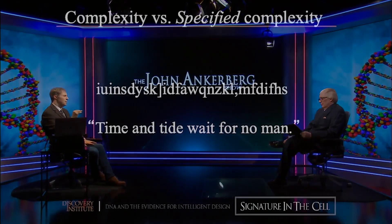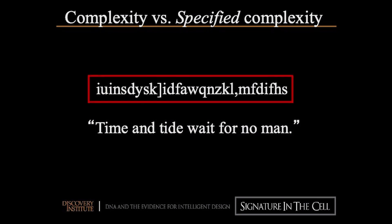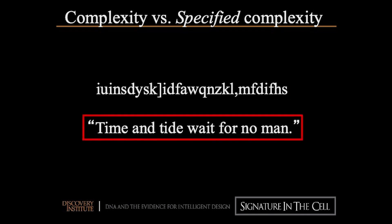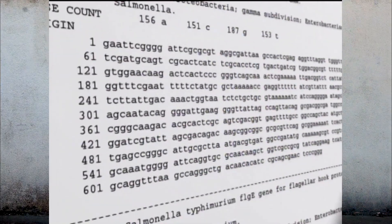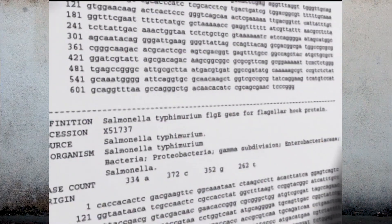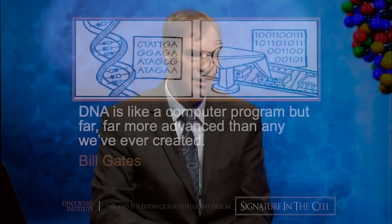In the information sciences, we make a distinction between complex sequences — which would be a kind of random gibberish — and specified complex sequences, which is what we have in DNA. It's a very special kind of information that we associate with only two other things in all of human experience: one is written language, and the other is machine code or digital code. We have the same kind of information in DNA, which in our experience always points to a designing intelligence.